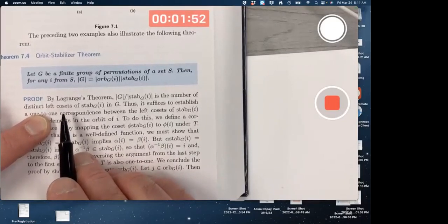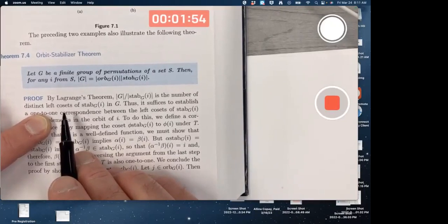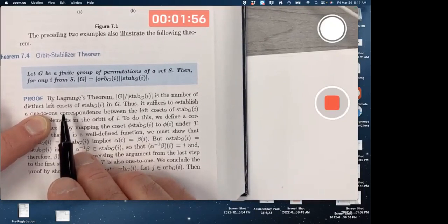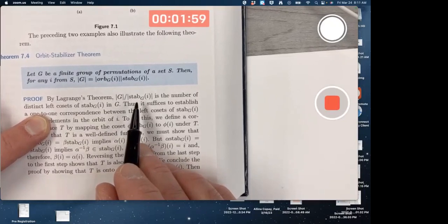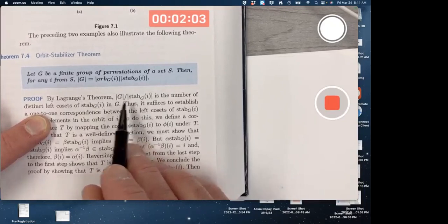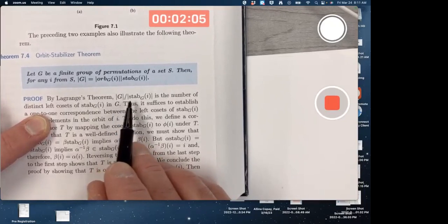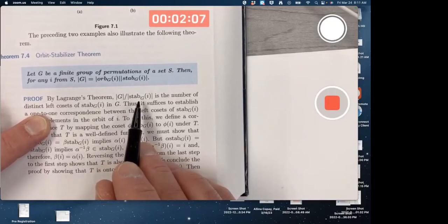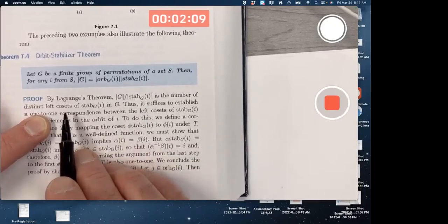Lagrange's Theorem says when you've got a finite group, the order of any subgroup divides the order of the group. The stabilizer of an element of S is a subgroup of G. So its order divides G. And moreover, if you can figure out what this fraction is, it does represent the number of left cosets.